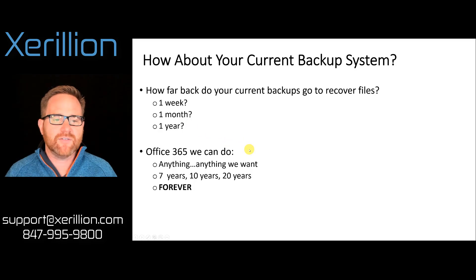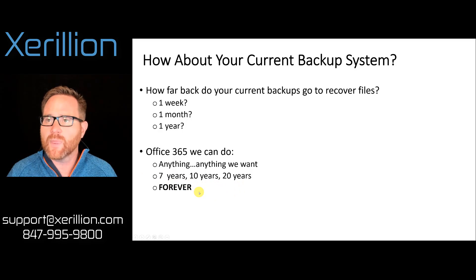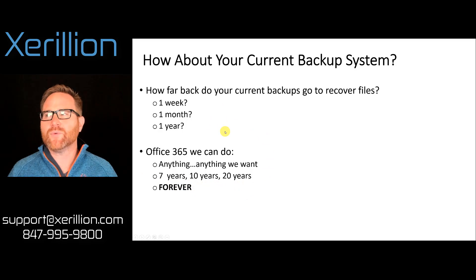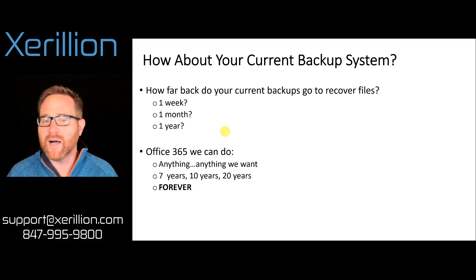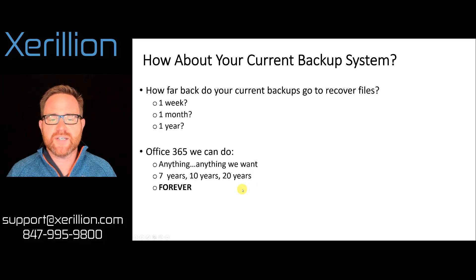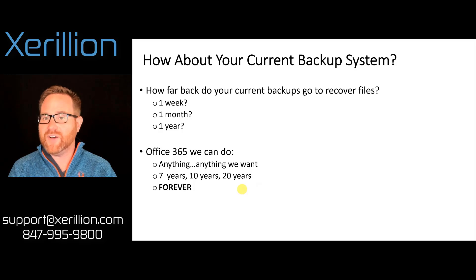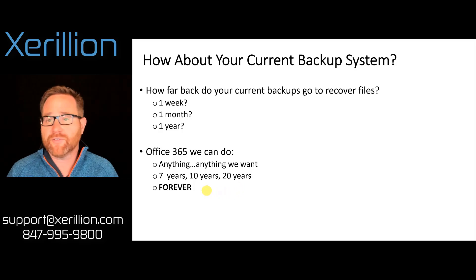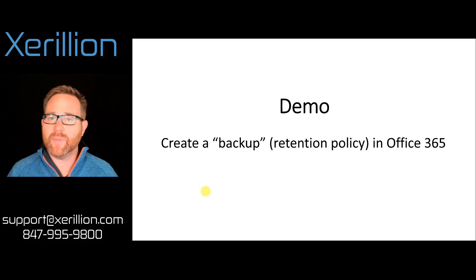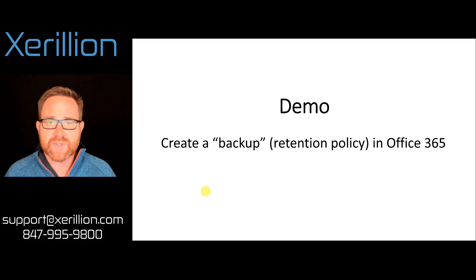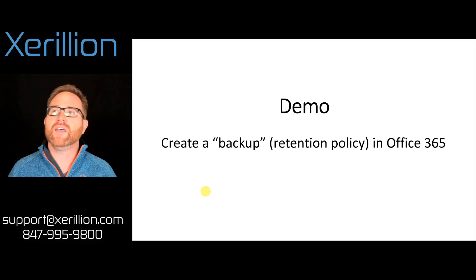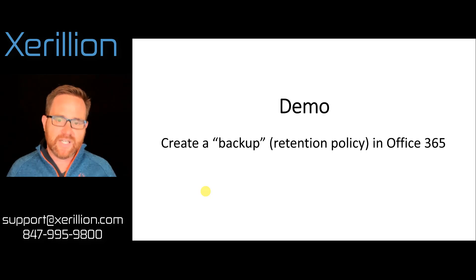In Office 365, we can do anything we want. I can protect a file for seven years, 10 years, 20 years, forever. Backups are not really protecting the files — they're backing them up. Whereas a retention policy specifically says: how long do you want me to protect that file? If it gets deleted, how long do you want me to hold on to it? A very simple one is a forever retention policy, where all the data coming into the organization — emails, files — we're going to hold on to it forever, even if it gets deleted.